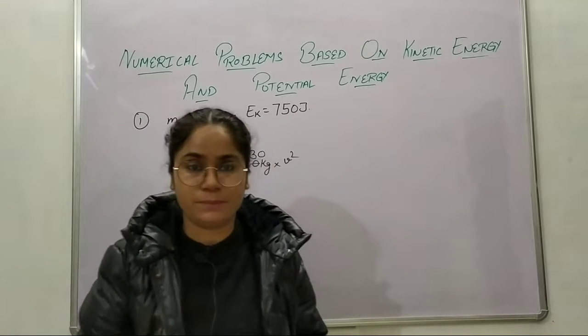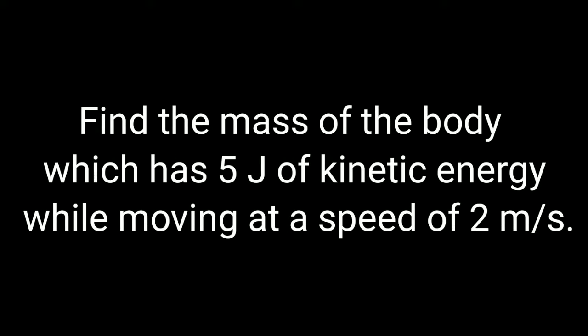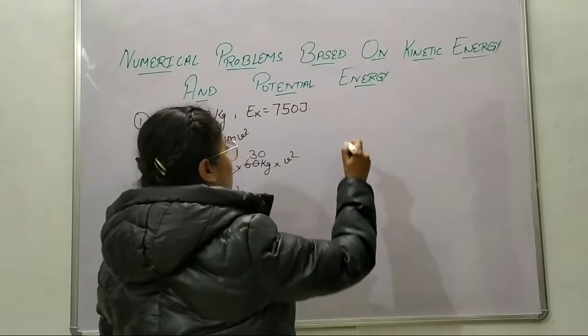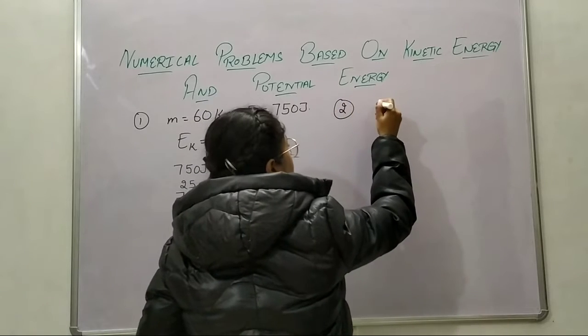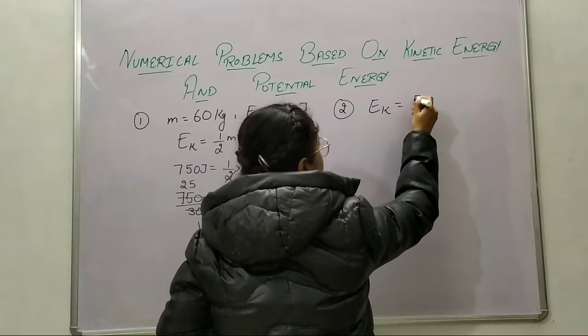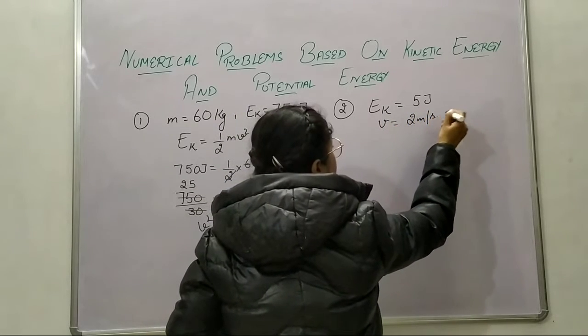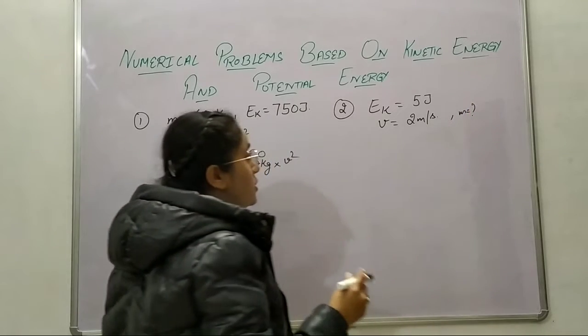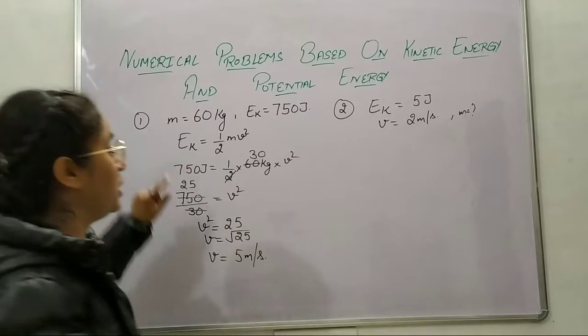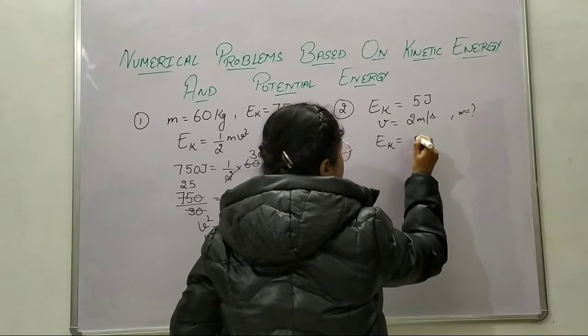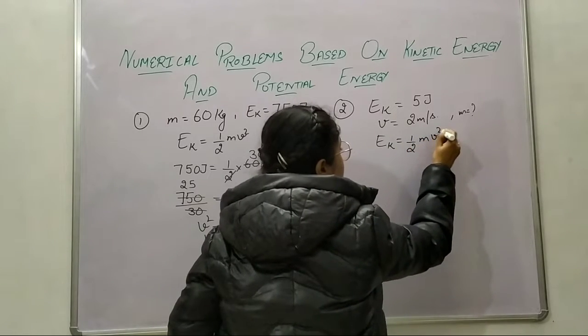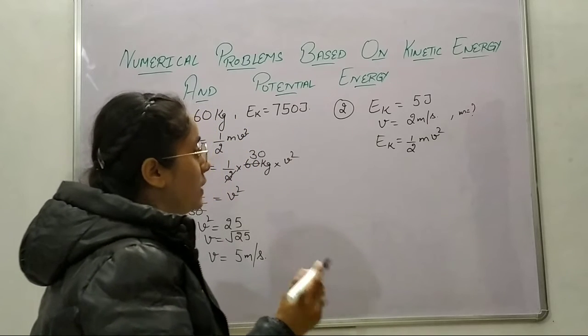Now let's move on to the second problem. Find the mass of the body which has 5 joule of kinetic energy while moving at a speed of 2 meters per second. In this problem we are given kinetic energy of 5 joule and speed of 2 meters per second, and we need to find the mass. We will use the same formula: kinetic energy equals half mv squared. We need to find m.